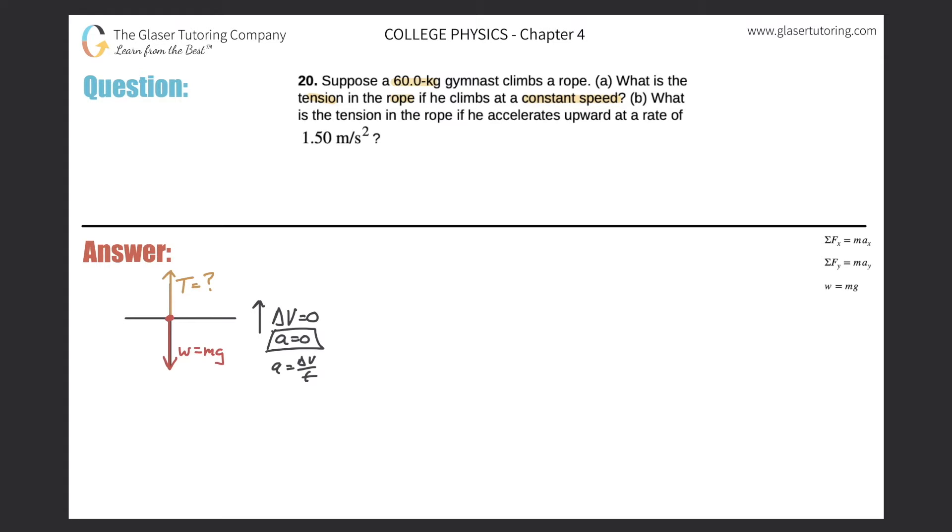So now we have enough information we need in order to figure this out. So this is a y problem. Remember, all problems in the y direction, you always want to consider the weight of the object. So sum of the forces in the y direction should equal the mass times the acceleration in that y direction. So what are the forces in the y? Well, we detailed it in the picture. There's a tensional force pointing up, so it's positive. And then there's a weight, or mg, pointing down. So subtract mg here. And that should equal then the mass times the acceleration in the y.